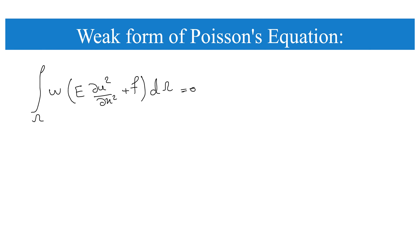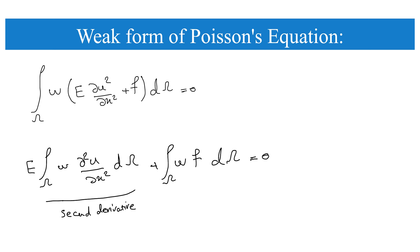To obtain the weak form of the equilibrium equation, we multiply by w (the test function) and integrate over the whole domain omega. Assuming E is constant over the domain, we can take E outside the integral. We then have the test function w multiplied by the second derivative of u over x, and we use integration by parts to weaken the smoothness requirements on the solution u.